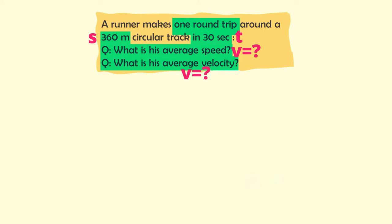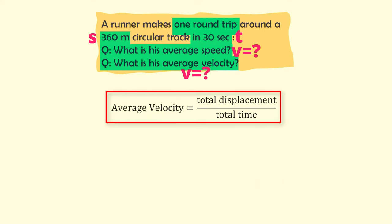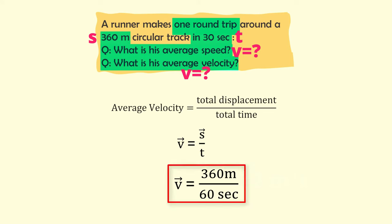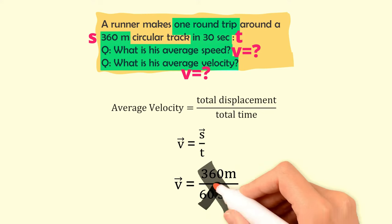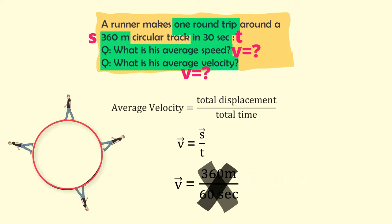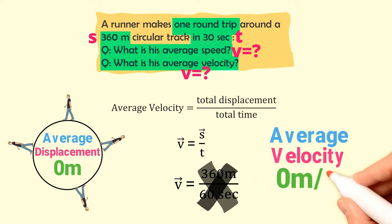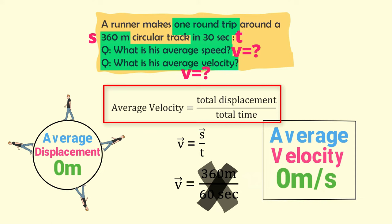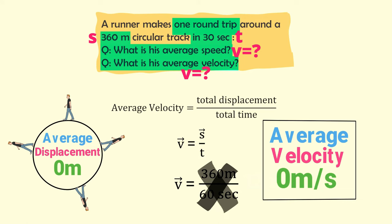Now, what about average velocity? We know that average velocity equals total displacement divided by total time. Here, many students make a blunder — they use 360 meters as the displacement. But this is wrong. Since the runner completes one round trip, the initial and final positions are the same, so average displacement is zero. When displacement is zero, average velocity is zero. Physics numericals check both your concepts and your calculating skills.